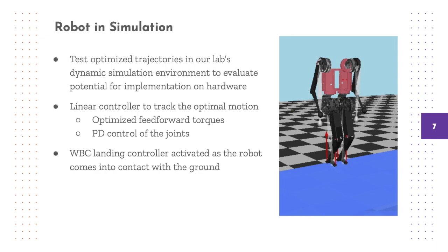Lastly, since the trajectory optimization ends in the flight phase and landing is not considered, we activate a simple whole-body balance controller as soon as the robot touches the ground in an attempt to stick the landing. We will explain later why more work is needed when it comes to the landing.